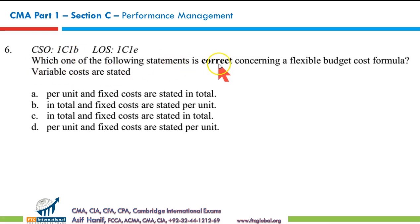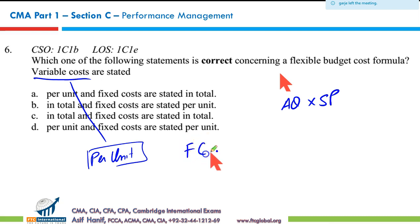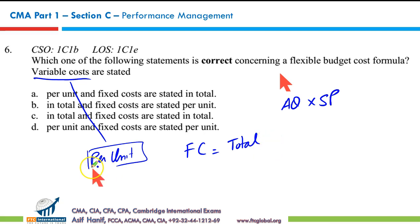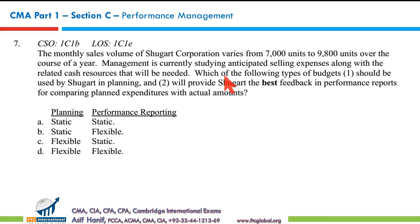Which of the following statements is correct concerning a flexible budget cost formula? The flexible budget cost formula uses actual quantity multiplied by the standard price. Variable costs are expressed on a per unit basis, and fixed costs are expressed in total — that is the cost behavior we studied in Cost Management. So variable costs are stated on a per unit basis and fixed costs in total. That makes A the correct option.